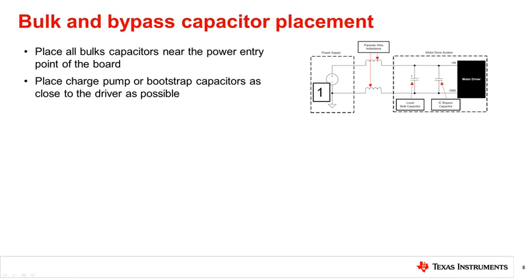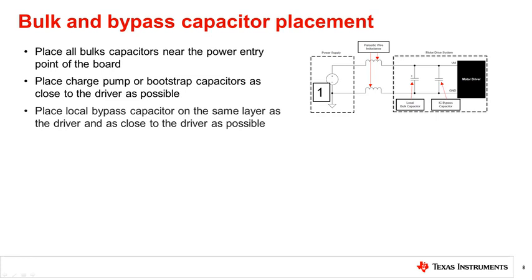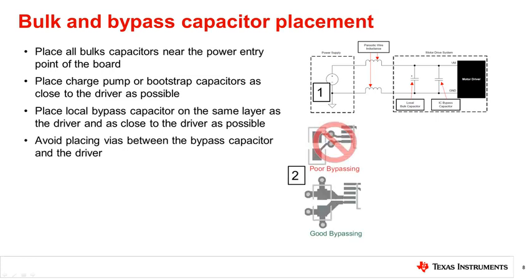For drivers with integrated charge pumps, place the charge pump capacitors or bootstrap capacitors as close to the driver as possible to minimize trace inductance impedance between the capacitors and the charge pump pins — high trace inductance can cause unwanted oscillations affecting charge pump performance. Make sure local bypass capacitors are on the same layer as the driver IC and are close to the driver, so signal traces between the bypass capacitors and the IC do not require vias, which can increase inductance. Note that the capacitor of lower value should be placed closer to the IC. Avoid placing vias between the bypass capacitor and the driver, as vias increase the inductance in the high current loop.